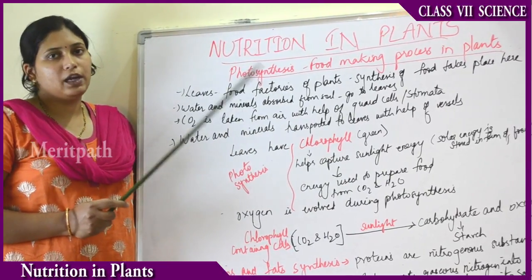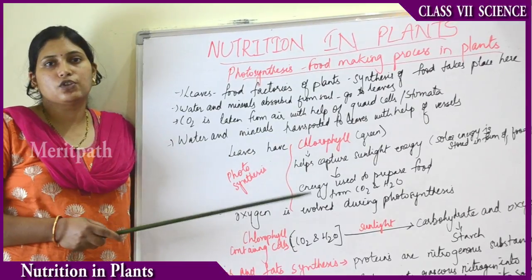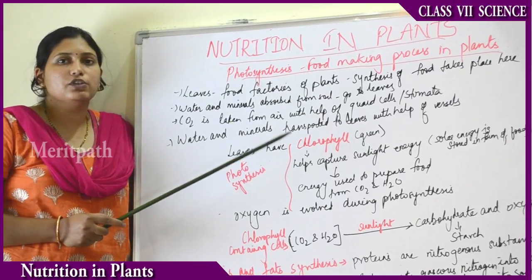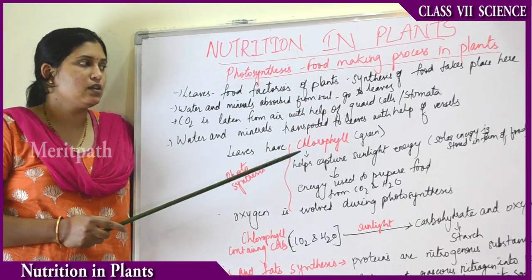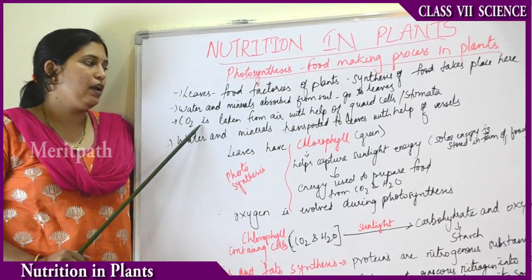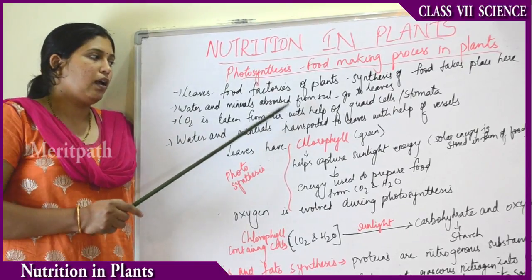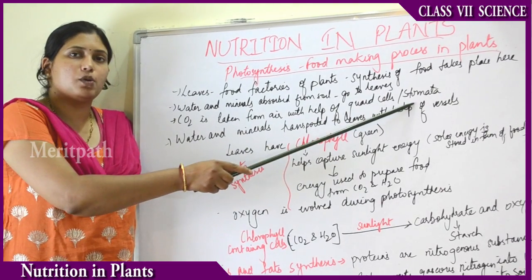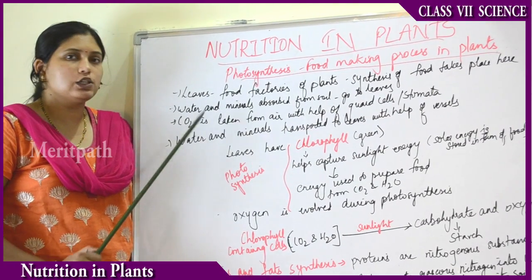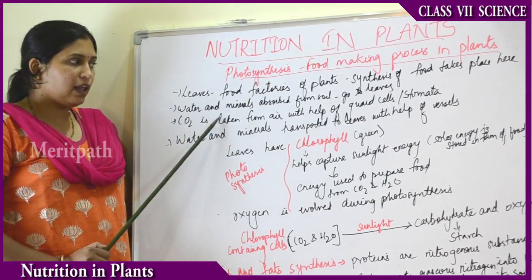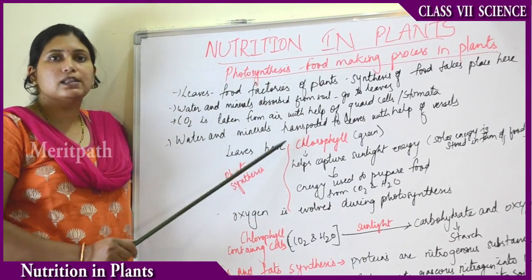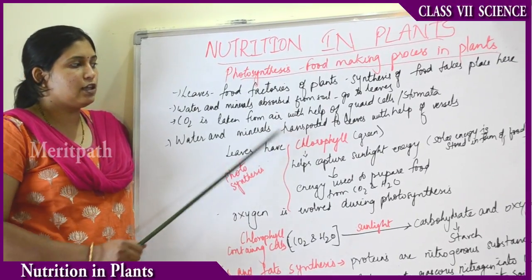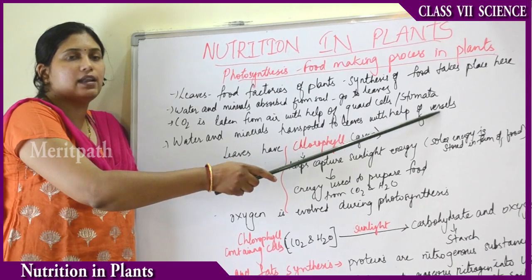Carbon dioxide is taken from the air with the help of guard cells or stomata. All plants are made up of cells, and among the cell structures are guard cells or stomata, present on the surface of leaves. Carbon dioxide is absorbed from the air through stomata and helps in the process of photosynthesis. Carbon dioxide also helps in the respiration process, known as transpiration, in the plant.